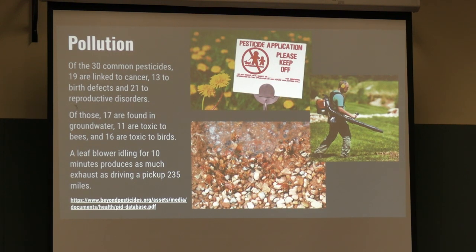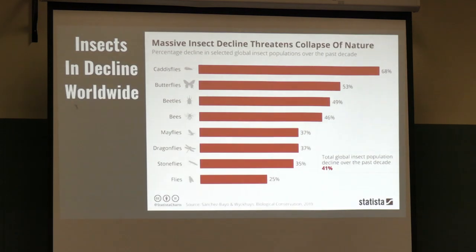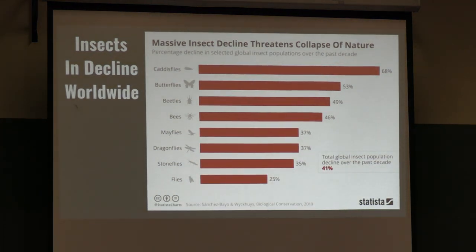Another statistic: a gas-powered leaf blower, when it's just idling going from here to there, produces as much pollution as a pickup truck driving 230 to 350 miles. And the result of all those chemicals and air pollution is that we've had a worldwide decline in insects—not just here in the United States. You see over 60% decline in the insects with gossamer wings—butterflies, beetles. Almost 50% of all these insects have declined as a result of all the pesticides and air pollution.